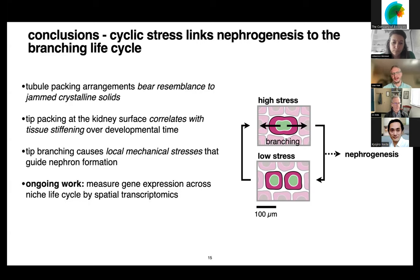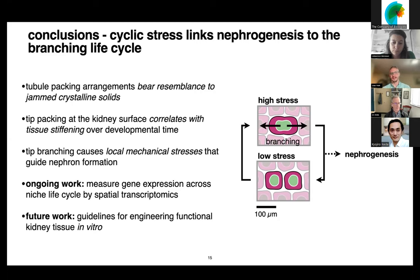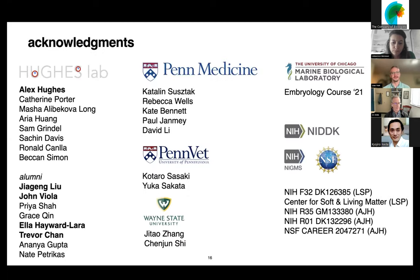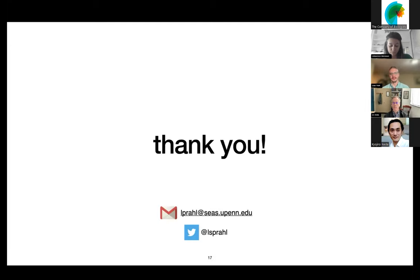Ongoing work in the lab includes measuring gene expression across the niche life cycle by spatial transcriptomics, work being carried out by two Hughes lab grad students. What I'm really excited about is taking this as future inspiration for engineering functional kidney tissue in vitro and possibly engineering the branching process. I'm thankful to my advisor Alex Hughes and the students in the Hughes lab, especially coauthors on this packing work: Jia Gong Liu, John Viola, Ella Hayward-Laura, and Trevor Chan, as well as our collaborators and funding sources.